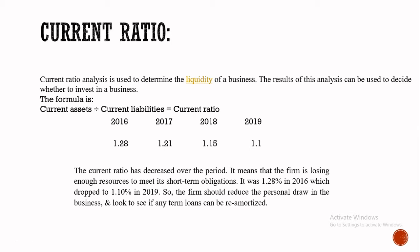The current ratio has decreased over the period. This means that the firm is losing enough resources to meet its short-term obligations. It started at 1.28% in 2016 and dropped to 1.10% in 2019. The firm should reduce personal draws in the business and look to see if any loans can be re-amortized, because the company's current liabilities are increasing compared to its current assets. The company should focus on reducing its current liabilities.